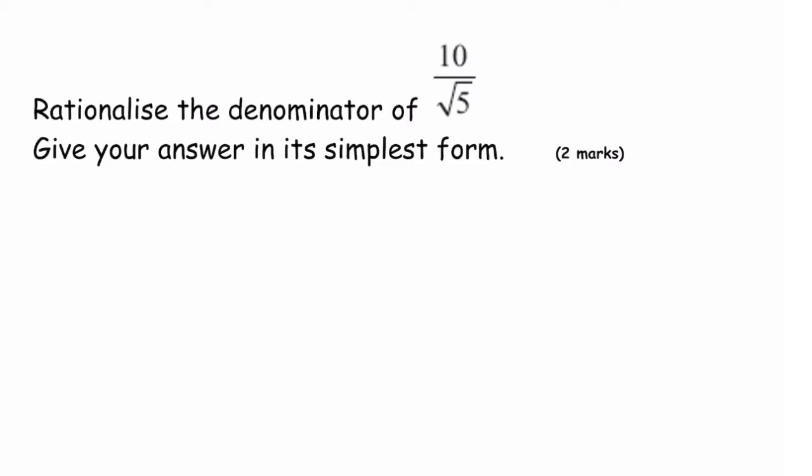So over here we have a question: rationalize the denominator of 10 over root 5, give your answer in its simplest form, and it's worth about two marks. Now what does it mean by rationalizing the denominator? Well, to rationalize the denominator basically means to get rid of the third form from the denominator.